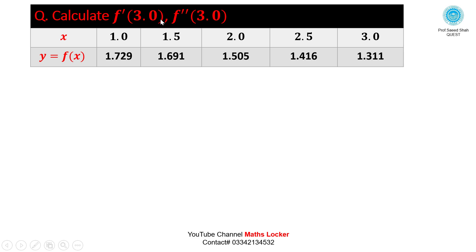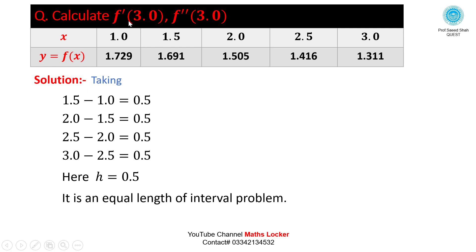Now calculate F'(3.0). The data given in the table: x = 1, 1.5, 2, 2.5, 3 and y = f(x) = 1.729, 1.691, 1.505, 1.416, 1.311. Checking the length of interval: 1.5−1 = 0.5, 2.0−1.5 = 0.5, etc., so h = 0.5. This is an equal length of interval problem.